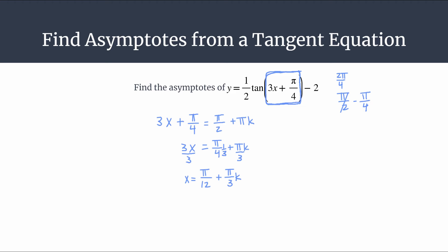Let's start by substituting in k equals 0. So if k is 0, we have x equals pi over 12 plus pi over 3 times 0, which of course makes that whole term 0. We're left with an asymptote at x equals pi over 12.